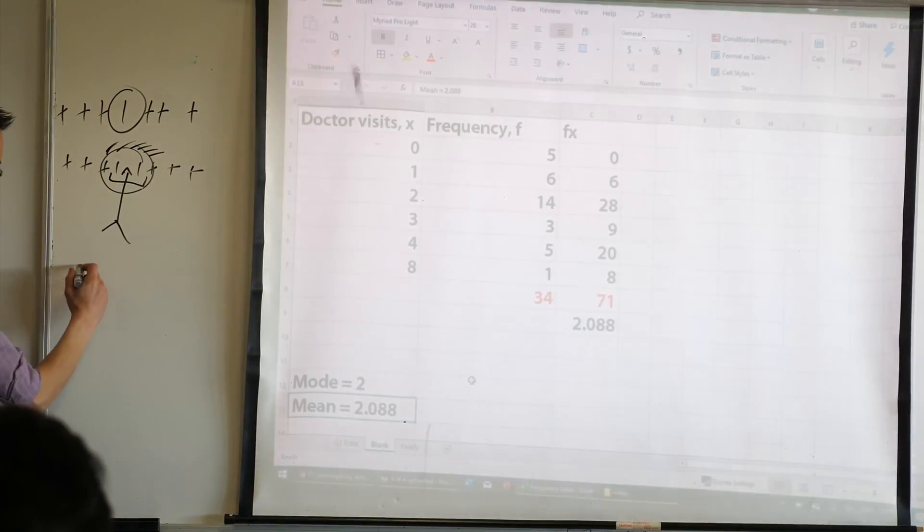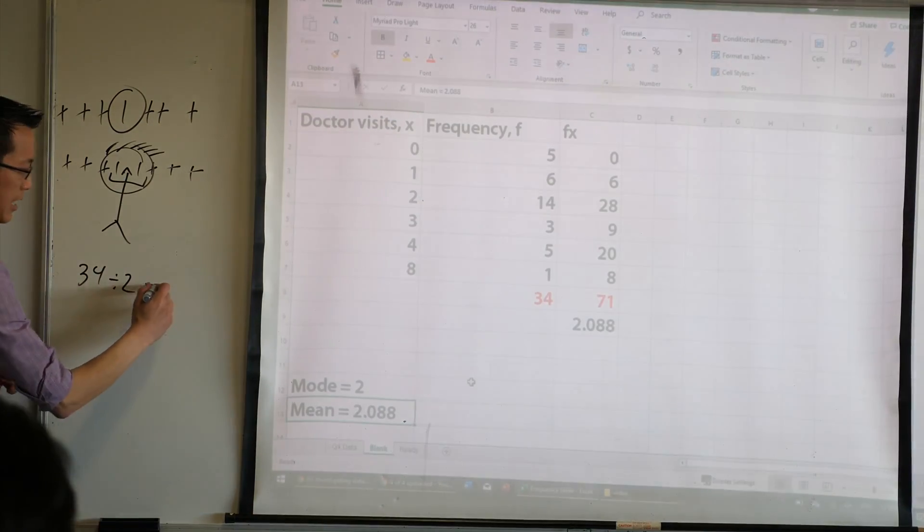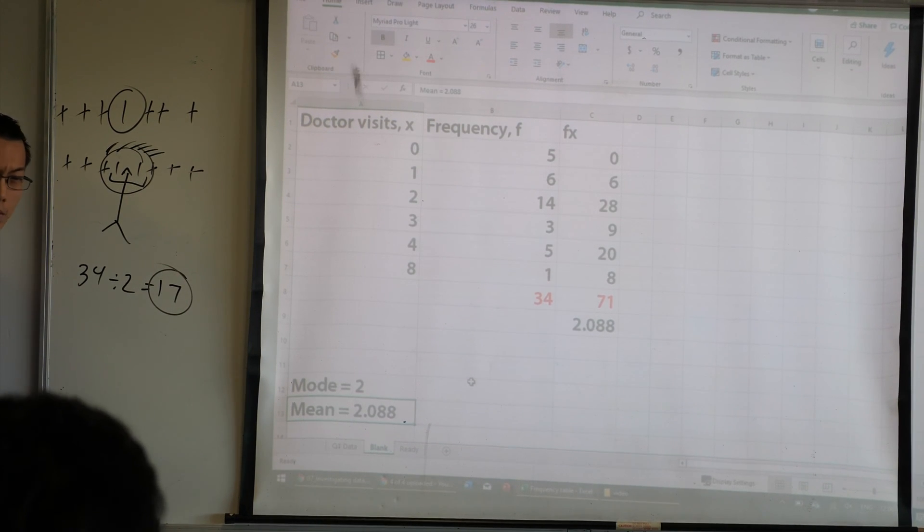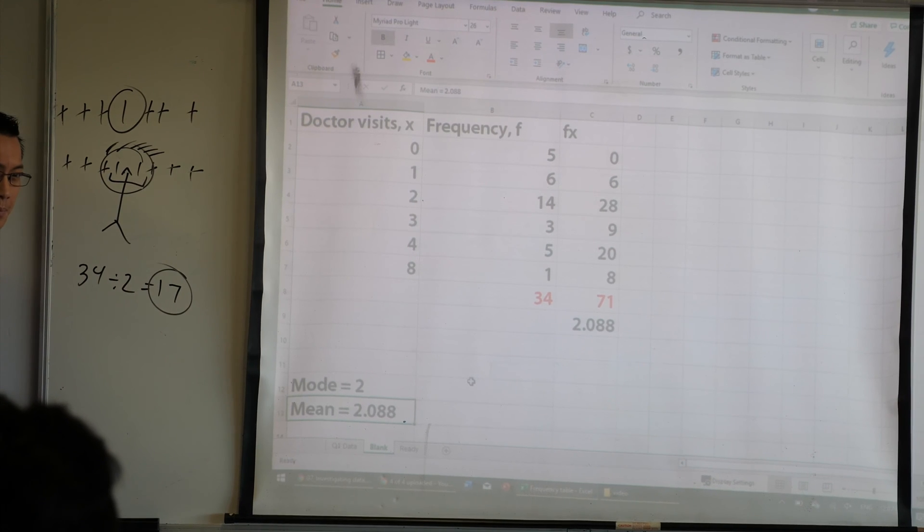34 divided by 2. 34 divided by 2. Last I checked was? 17. So what do I do with that? Frequency. What do you reckon about? So,